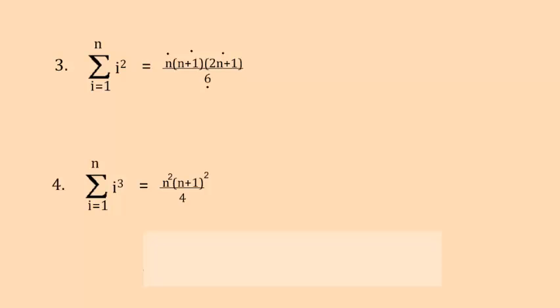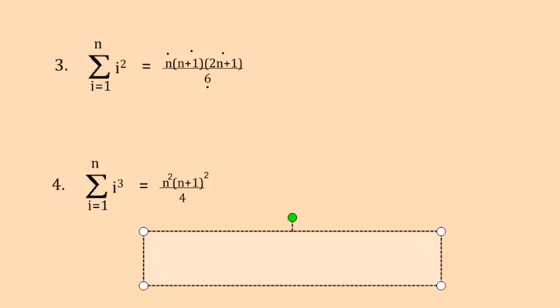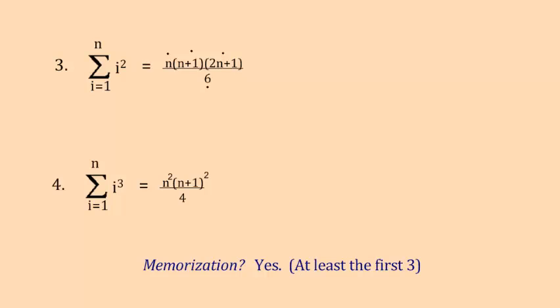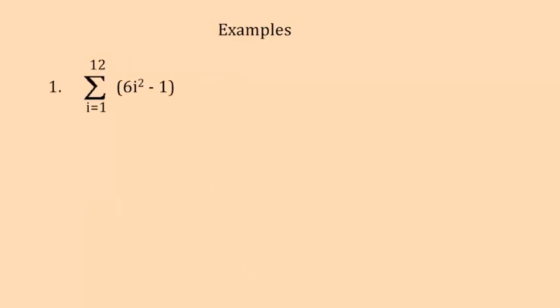A question that I get at this point often is, are we going to have to memorize these? And the answer to that is pretty much yes. At least the first three. I'll expect you to have the first three. The constant's pretty simple. i to the first and i to the second are a little more sophisticated, but they come up so often that I do expect you to have them memorized. So let's look at some examples that take the formulas we're looking at today in accompaniment with some of the properties we looked at yesterday.